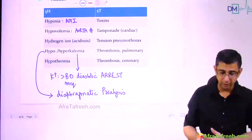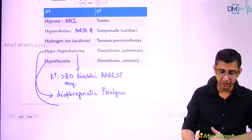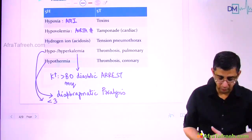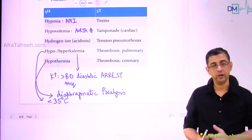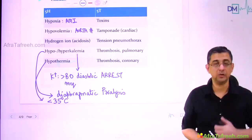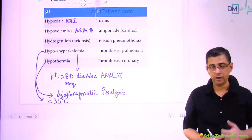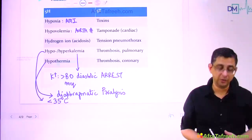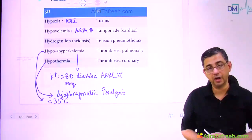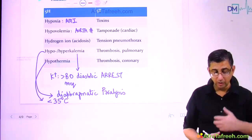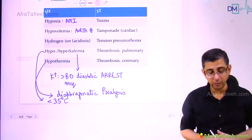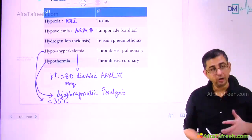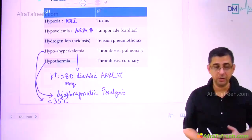The last H is hypothermia. If core temperature is less than 35 degrees Celsius, the person is in dangerous hypothermia — as illustrated by Leonardo DiCaprio as Jack in Titanic, or a soldier buried under ice in an avalanche at Siachen Glacier. We need to rewarm the body of the patient so that heart activity can return to normal. So the five H's are: hypoxia, hypovolemia, hydrogen ion excess, electrolyte imbalance (hypo- and hyperkalemia), and hypothermia.